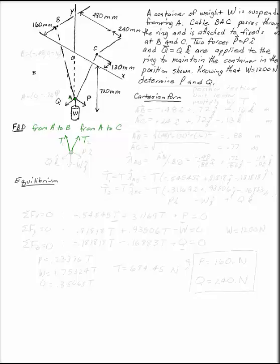This cable passes through the ring and is attached to fixed supports at B and C. Two forces P and Q, P in the i direction and Q in the k direction are attached to the ring. We've also got this weight which is 1200 newtons.